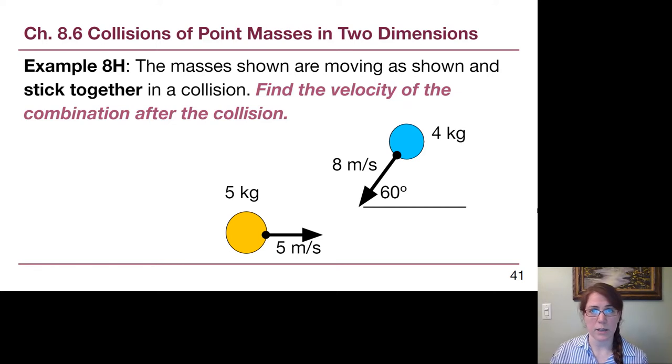The other example that we're going to look at as a fully worked example are these two masses that are both moving at the start of the problem and then they stick together at the end of the problem. And so in this case we'll have to realize that they will both have the same final x velocity and the same final y velocity and then we put those together in a triangle.